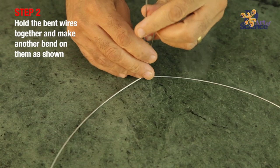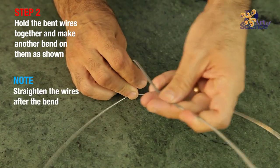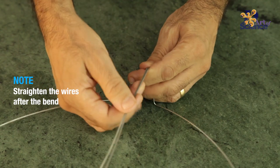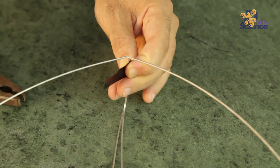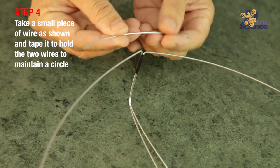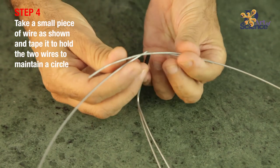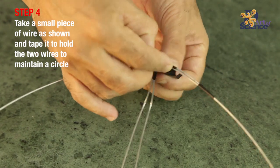Hold these bent wires together, and then bend them again as shown. Straighten this part of the wires. Hold these wires and tape them up. You will need a small piece of wire to hold these 2 wires in a proper circle. Tape it to the circle in 4 places as shown.